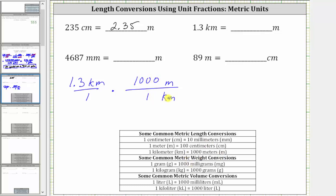Notice how the units of kilometers simplify out. Now we multiply, and the units are meters. Since the denominator is just one, 1.3 times 1,000 is equal to 1,300, and the units are now meters. 1.3 kilometers equals 1,300 meters.